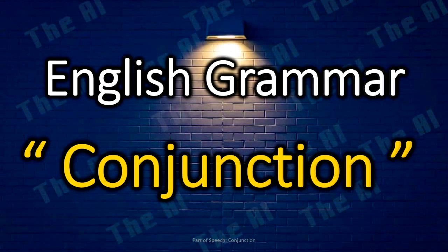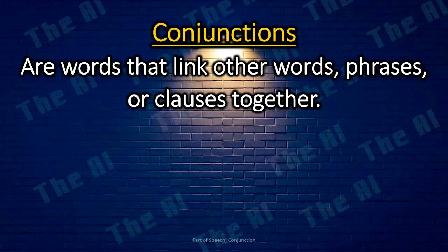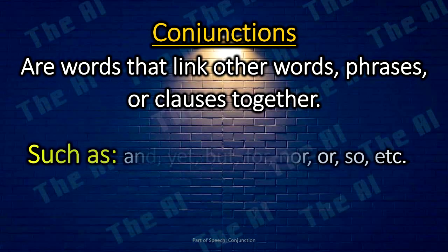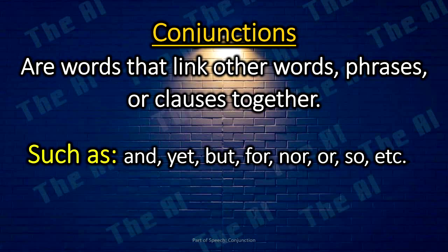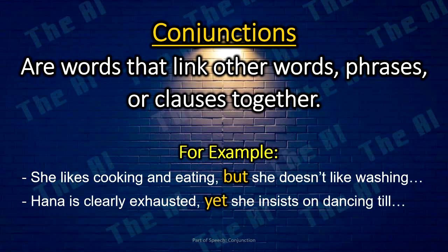Conjunctions. Conjunctions are words that link other words, phrases, or clauses together, such as and, but, for, nor, or, so, etc. For example: She likes cooking and eating, but she doesn't like washing dishes afterward. Hannah is clearly exhausted, yet she insists on dancing till dawn.